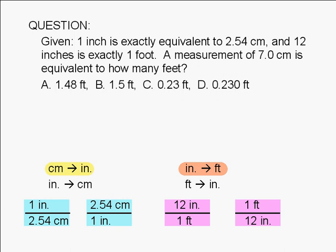So here's how it's done. Start with the known measurement, 7.0 centimeters. Multiply it by a conversion factor to convert centimeters to inches.